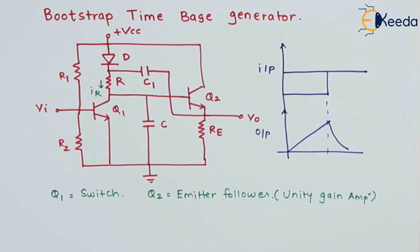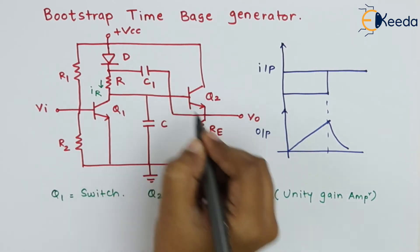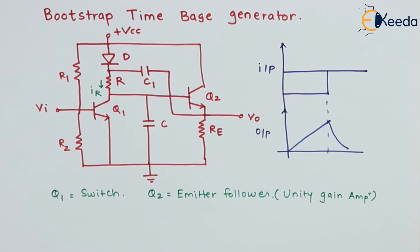That means whatever input is present at the base is available at the output of transistor Q2. Initially, consider that transistor Q1 is on.